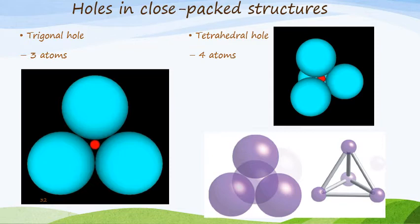We'll talk about four different holes. The first two are shown on this slide. The first one is a trigonal hole — where if we have three atoms or three spheres together, you can see the trigonal hole in the center, represented by the red dot. If we have a tetrahedral structure consisting of four atoms or four spheres, the red dot shows where the tetrahedral hole will be, and it's quite clear on the bottom diagram that you'll be able to fit a small sphere in that space.